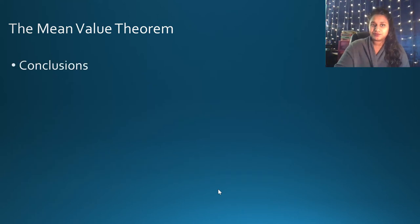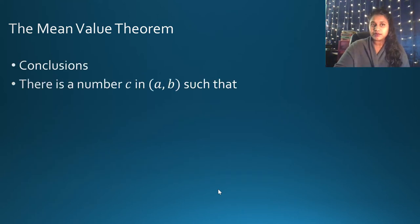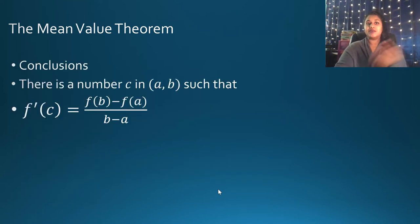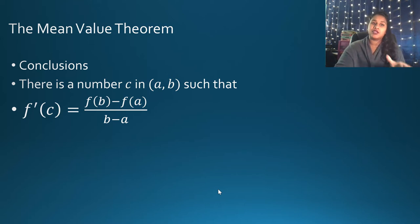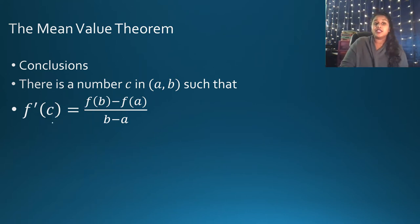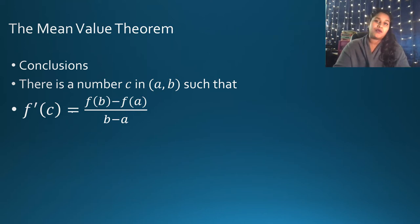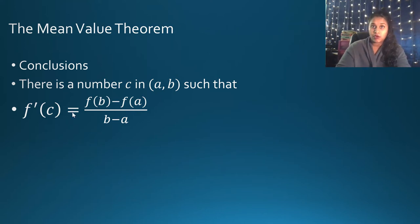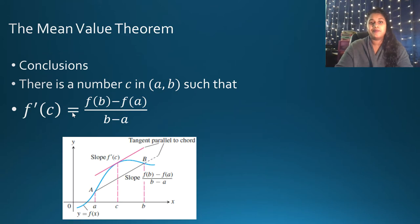The secant and tangent lines must have the exact same value. Our conclusion is this formula: F'(C) equals F(B) minus F(A) all over B minus A. Note it is exactly equal, not an estimate. Because it's exactly equal, you can actually solve for the C value, which is what we solve for more often than not when solving a Mean Value Theorem question on the calculus exam.